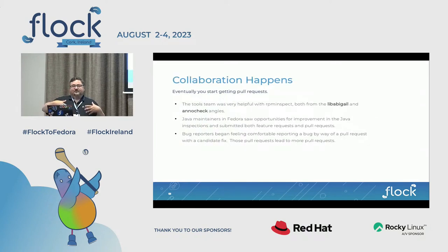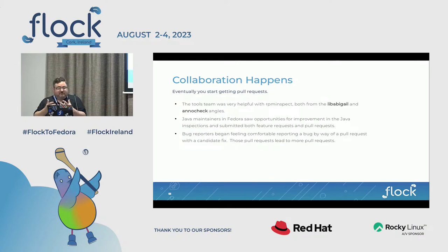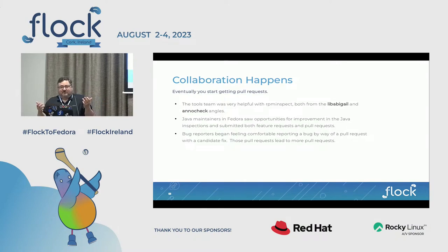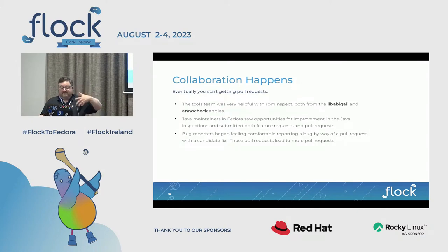Eventually you start getting people aware and they start sending pull requests. I had some surprises — the Java maintainers at Red Hat were really interested in proving stuff in RPM inspect and I started getting pull requests from them, which was really cool. The AnaCheck and LibAbigail maintainers on the tools team were also really interested and receptive to bug reports. They even turned AnaCheck into LibAnaCheck and gave it a public API, which was really nice.